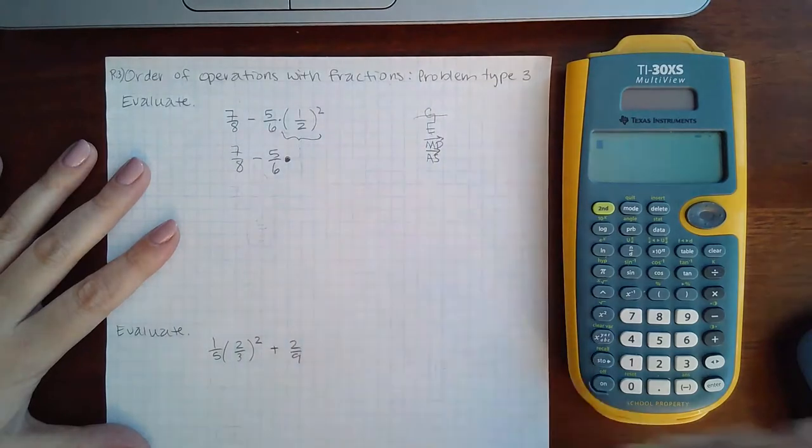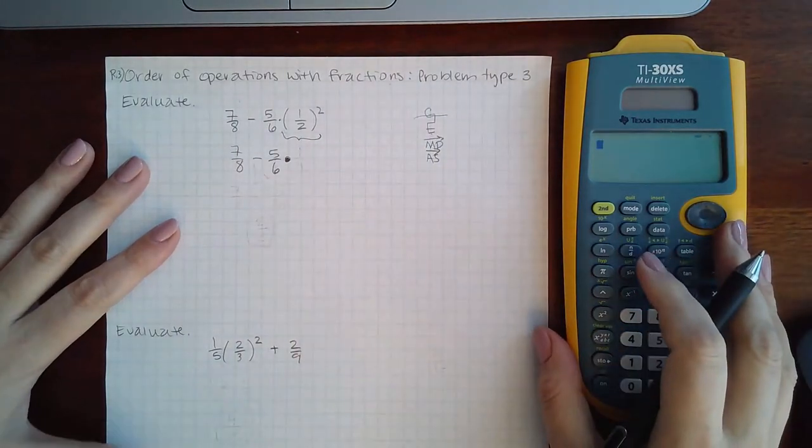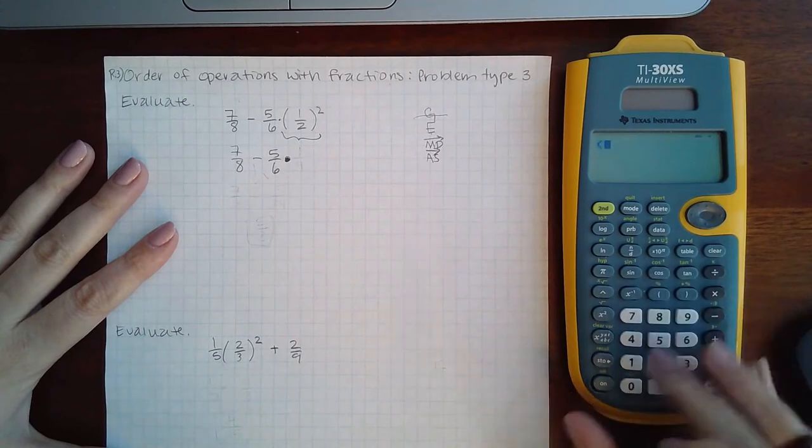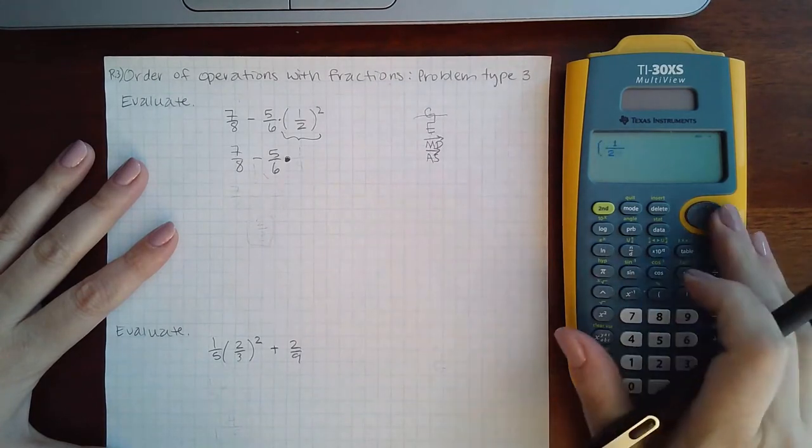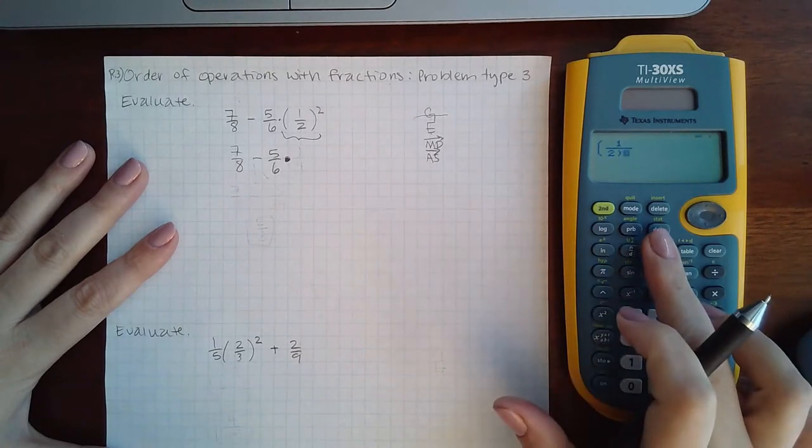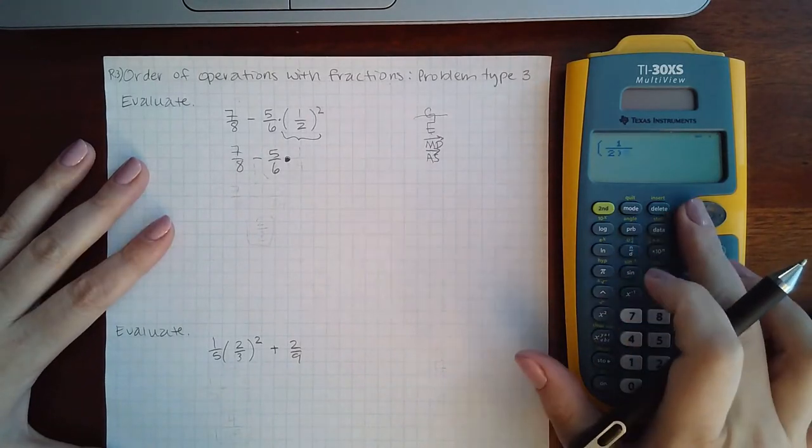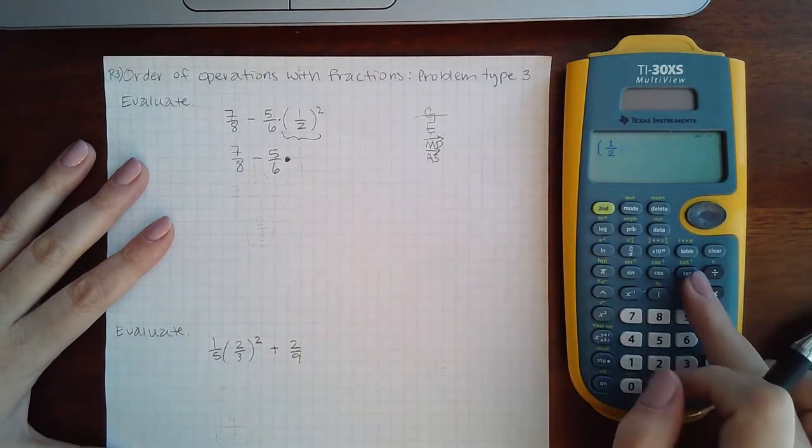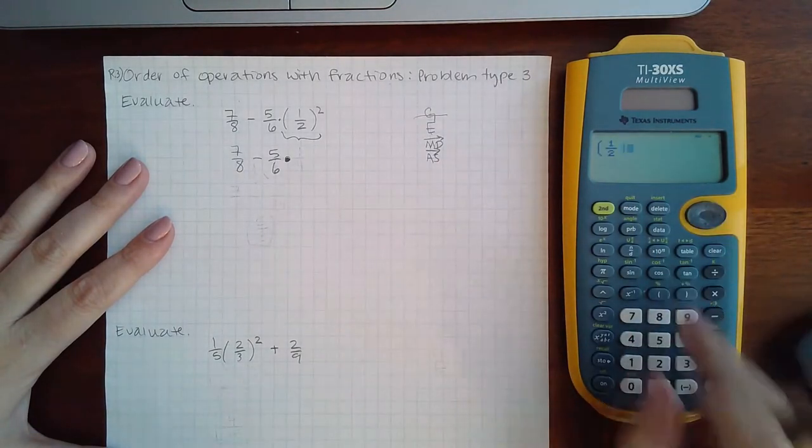When I rewrite this I'm going to write in that multiplication so that it's evident. Then I'm going to parentheses one over two. Notice how what's on my calculator does not match what's on my paper. That parentheses should be large covering the whole one half, so do the right arrow first and then do the parentheses.